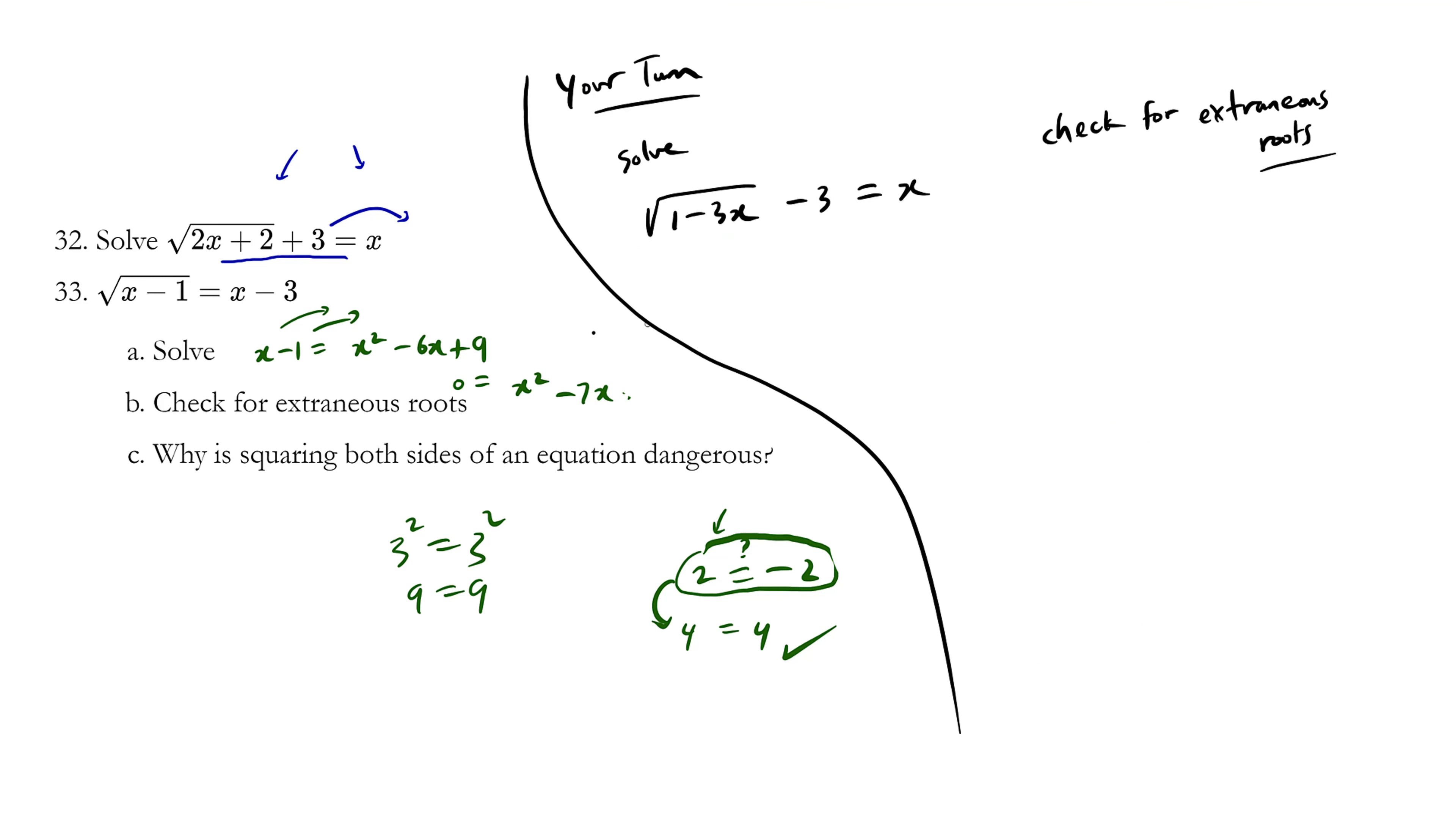And now it's your turn. Solve √(1 - 3x) - 3 equals x and check for extraneous roots.